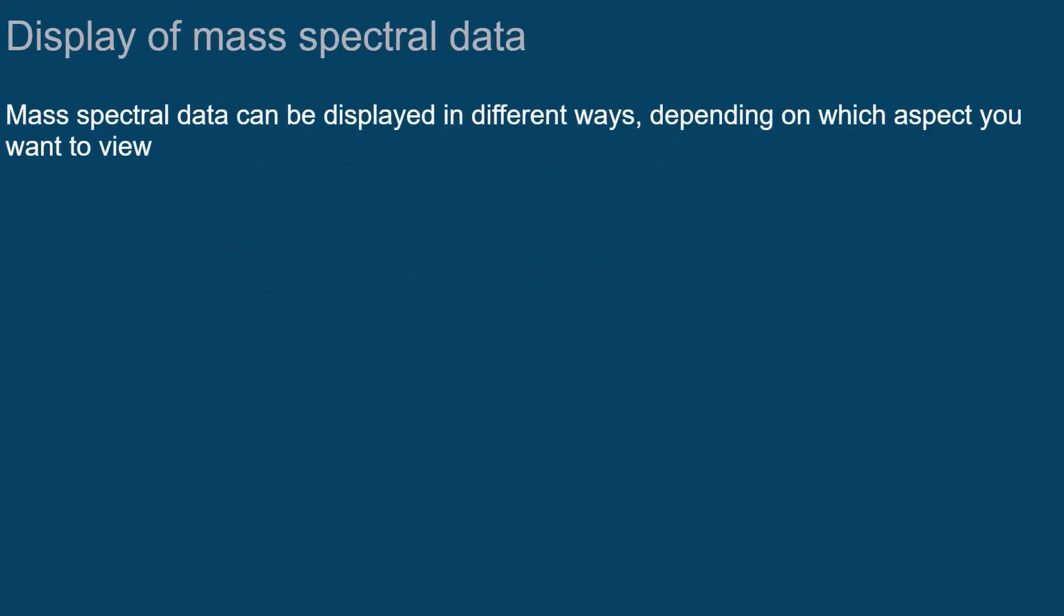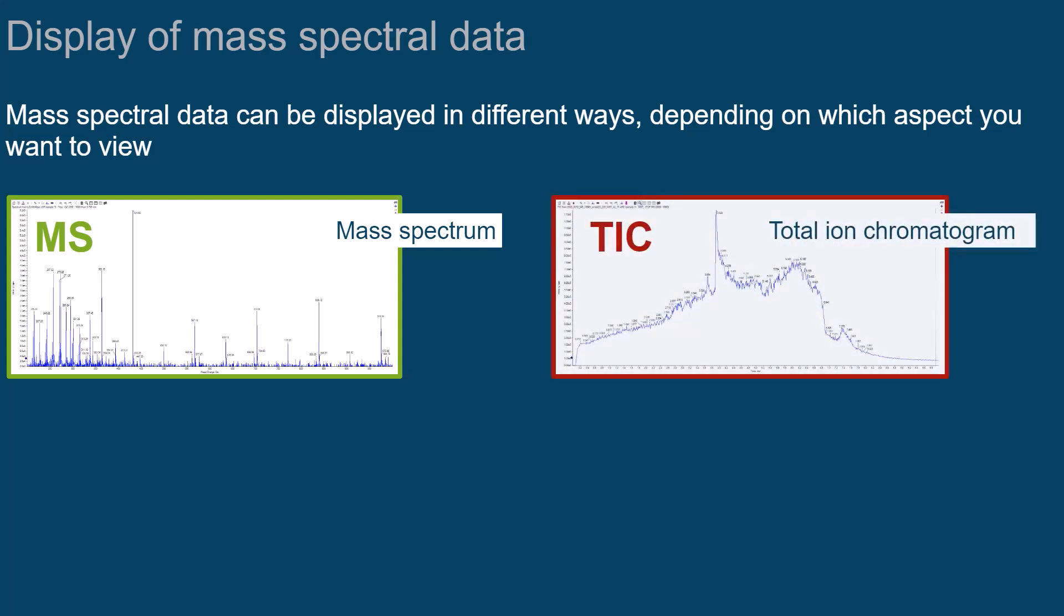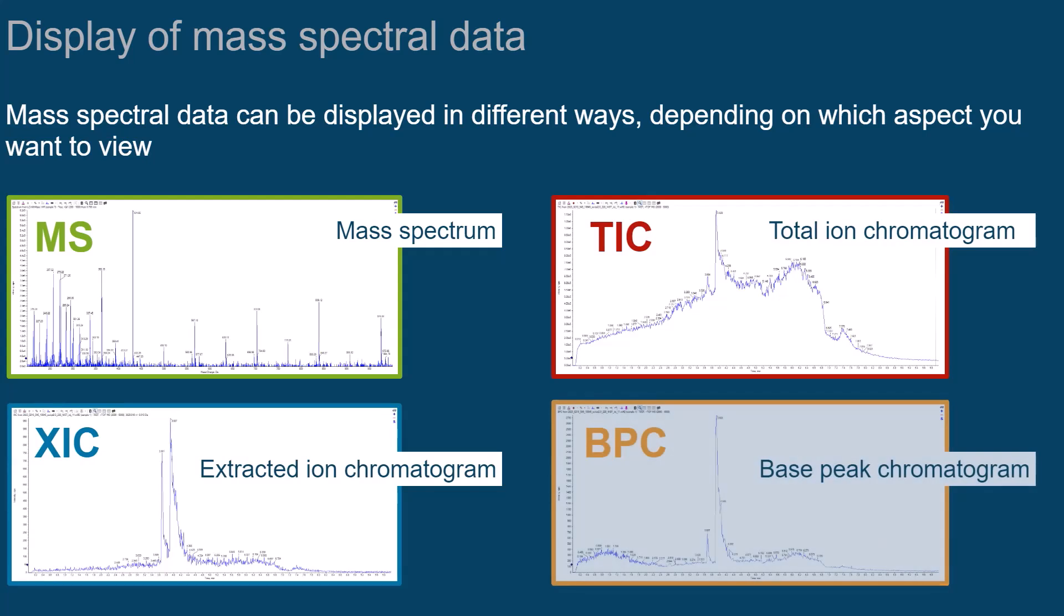Mass spectral data can be displayed in different ways, depending on which aspect you want to view. We distinguish between the mass spectrum, the total ion chromatogram, extracted ion chromatogram, and the base peak chromatogram.